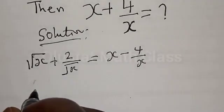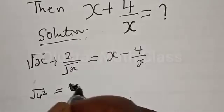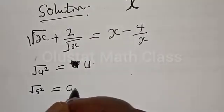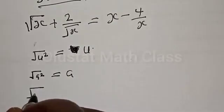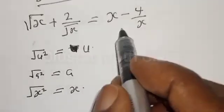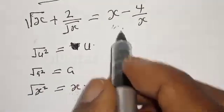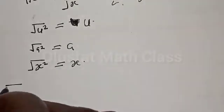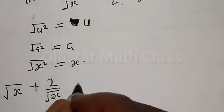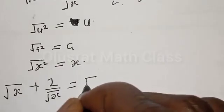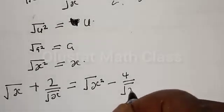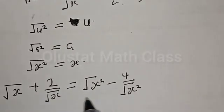We know that square root of u squared is the same thing as u. Also, square root of a squared is equal to a. Therefore, if square root of a squared is the same as x, then anywhere you see x in this given equation, you substitute with the square root of a squared. Our equation then becomes: square root of s plus 2 divided by square root of s equals square root of a squared minus 4 divided by square root of a squared. Let's try to factorize the right-hand side.